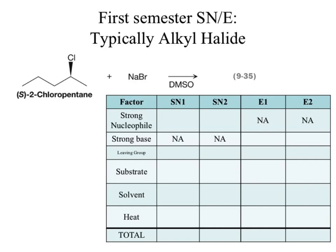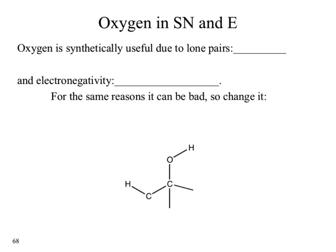However, we're now in second semester, which means we move up to different functional groups. We did touch on alcohol chemistry in first semester, but it's usually not fully explored until second semester. So, why might oxygen be useful in this structure? Why would it be synthetically useful? What can those lone pairs on that oxygen act as?